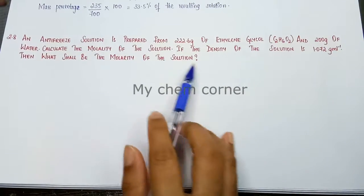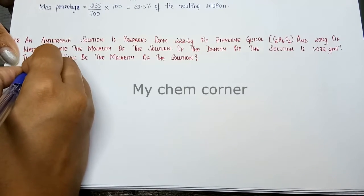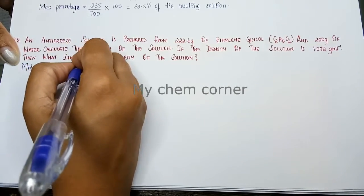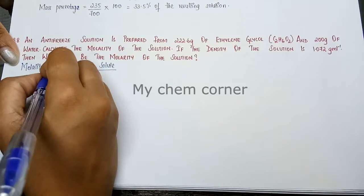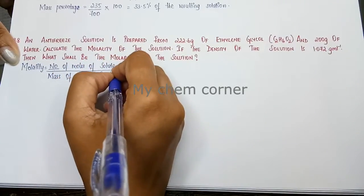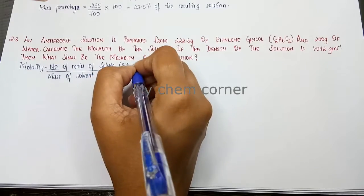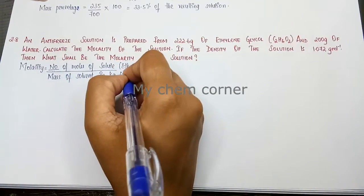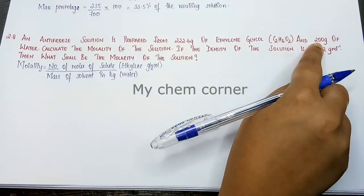First, since we are calculating molality, let's write the formula. Molality equals number of moles of solute divided by mass of solvent in kg. The solute mentioned here is ethylene glycol, and the solvent is water. The mass of solvent is given in grams, so we just have to convert it to kilograms.